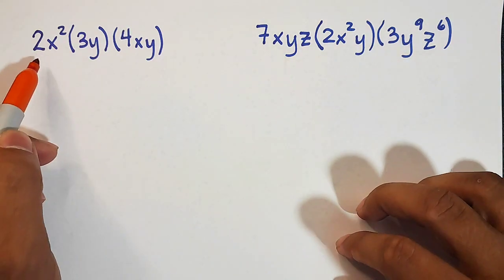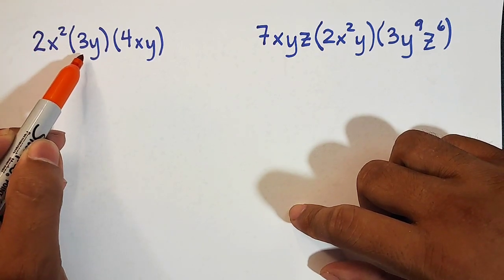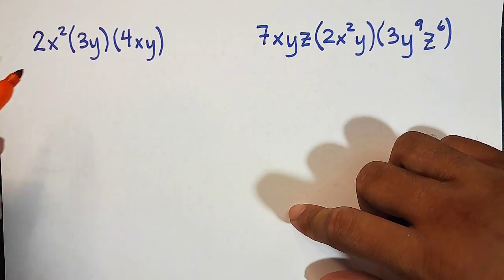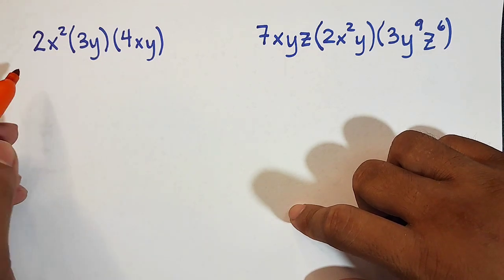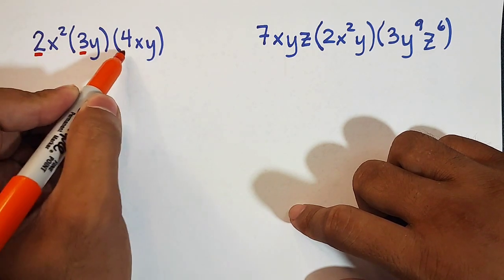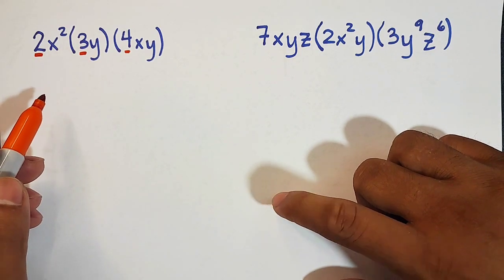We have the first problem, 2x squared times 3y times 4xy. Now here, we only need a simple multiplying of numbers, and we will multiply the exponents using the product rule.